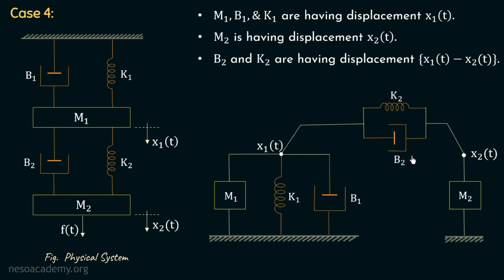Damper B2 and spring K2 are connected in parallel between nodes x1(t) and x2(t), completing all five steps to draw the equivalent mechanical system. This is the equivalent mechanical system of this physical system. I hope you understood this method to convert a given physical system into its equivalent mechanical system. Practice all these cases on your own, and in the next lecture we will solve problems based on analogous systems using force voltage analogy and force current analogy. Thank you for watching.